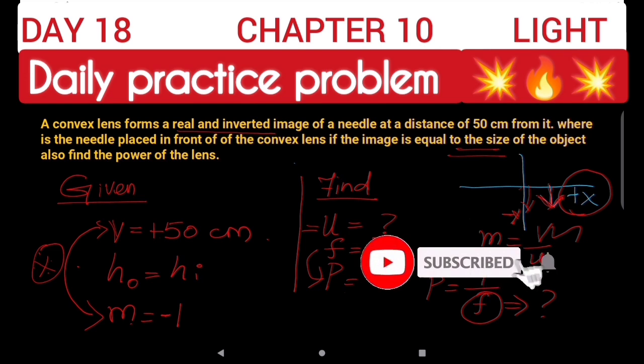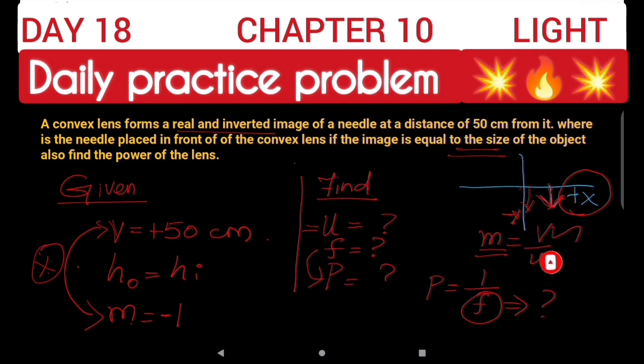So we have given data: V equals 50 centimeters, H0 is equal to HI, which means M is equal to minus 1. So it is easy. We can use the magnification formula. Next, we can use the lens formula to find F, and then use the power formula. Okay, let's do it.